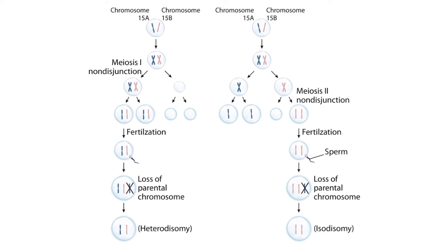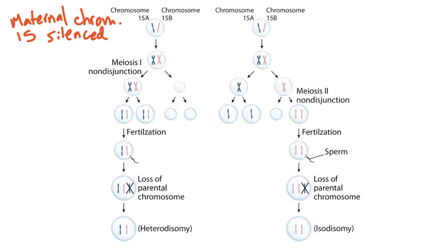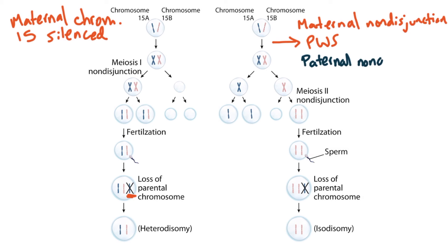So how does this apply to Prader-Willi syndrome and Angelman syndrome? Both maternal copies of chromosome 15 are normally silenced. Therefore, in uniparental disomy, both copies of chromosome 15 will be silenced because they're both inherited from the mother. In this case, the patient will not have a functional PWS gene from the father, resulting in the development of Prader-Willi syndrome. Non-disjunction during oogenesis can result in uniparental disomy causing Prader-Willi syndrome. On the other hand, non-disjunction during spermatogenesis can result in uniparental disomy causing Angelman syndrome. Because non-disjunction is much more common in women than in men, uniparental disomy causing Prader-Willi syndrome is much more common than uniparental disomy causing Angelman syndrome.